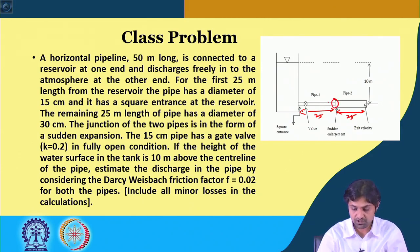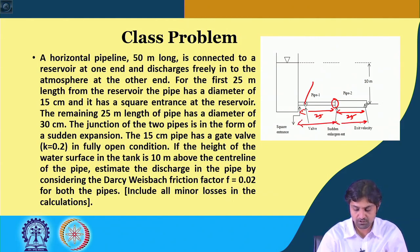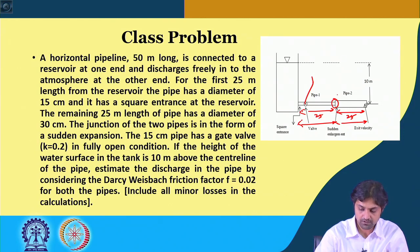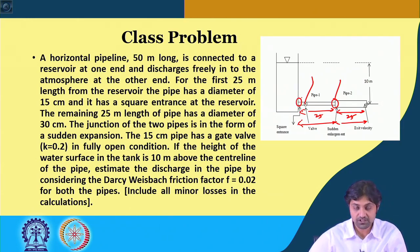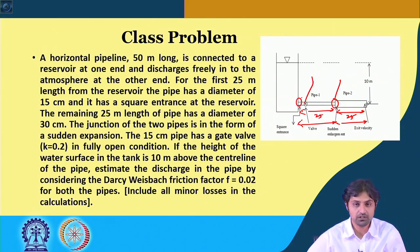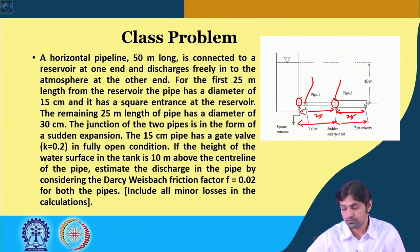There is a sudden expansion, there is a valve, there are going to be major losses in both pipe sections. Minor losses will be at the expansion point and there will also be a minor loss at the square entrance. This is a problem where you will get to understand and practice all the major and minor head losses, which is why I included it as a solved problem.